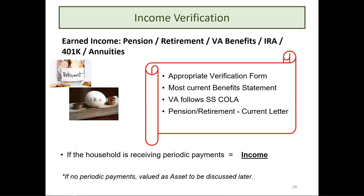For 401(k), retirement, VA benefits, and similar accounts: if the household is receiving periodic monthly payments from these funds, it is considered income. If no periodic payments are being received — whether a lump sum or nothing at all — these accounts are considered assets. Verify using the appropriate verification form or most current benefit statement. The VA follows the Social Security COLA. For pensions or retirement, use a current letter; for IRA annuities, use a current statement.